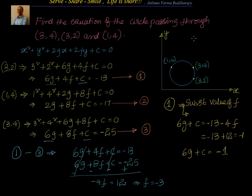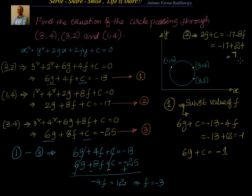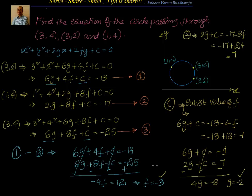Taking Equation 2 and substituting f = −3: 2g + c = −17 − 8(−3) = −17 + 24 = 7. So we now have two equations: 6g + c = −1 and 2g + c = 7. Subtracting the second from the first, c cancels and we get 4g = −8, so g = −2.